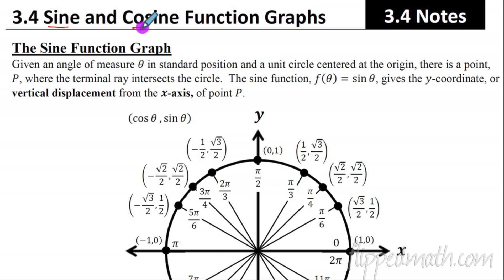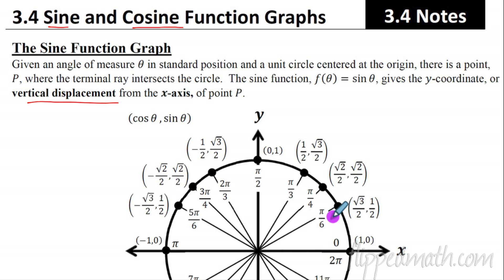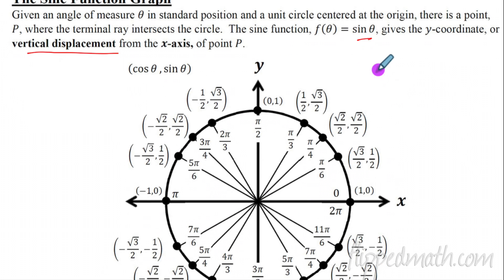Today we're going to graph the sine and cosine functions - that's section 3.4. I'll graph sine, and you're going to graph cosine by yourself, so pay attention. Remember the vertical displacement of point P on the unit circle is the y-coordinate - it's how high the point is above the x-axis. That is what sine of theta gives you. This is only true for a unit circle because the radius is one, so opposite over hypotenuse gives us the y value. Cosine gives the horizontal displacement, or x value, but focus only on that y value right now.